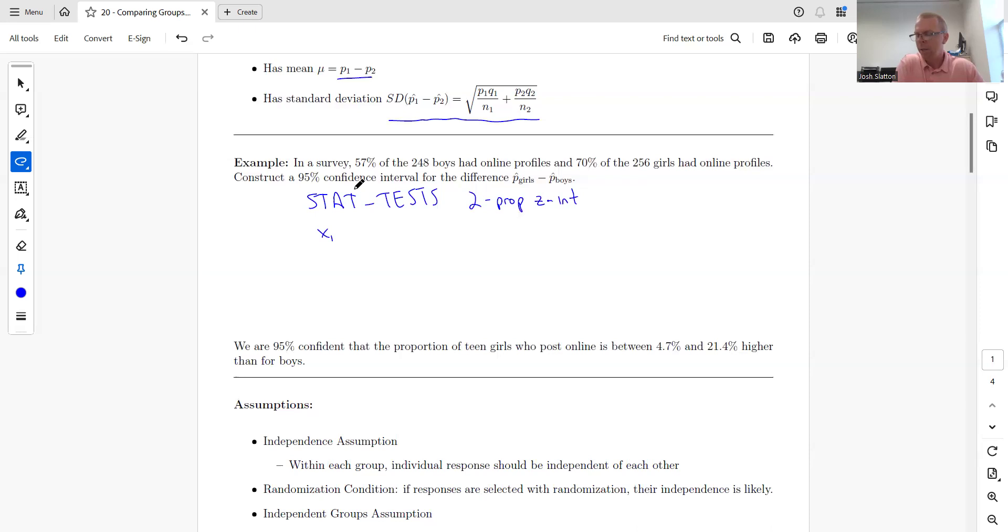Basically the same thing doubled. We have x1—this is the number of successes with the girls—and n1 will be the sample size for the girls. x2 and n2 will go with boys, and then we'll have the c level. This one is the girls, this one is the boys.